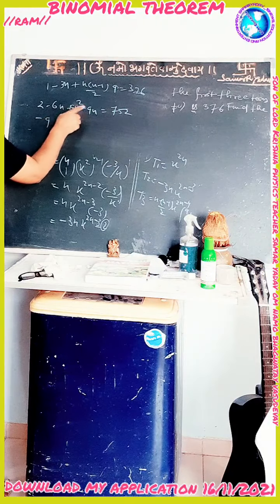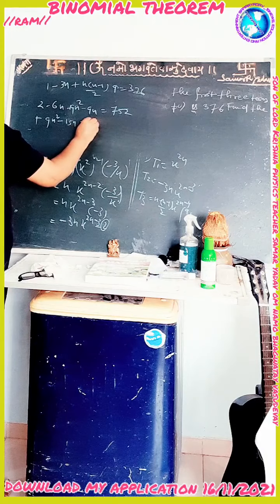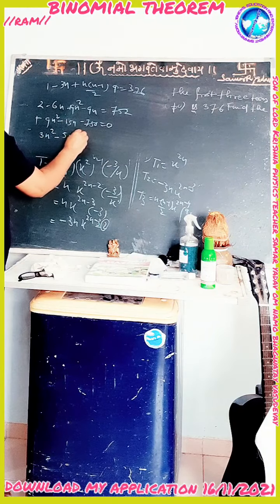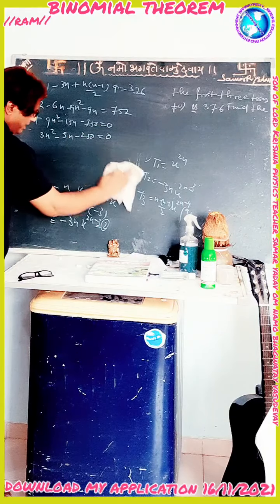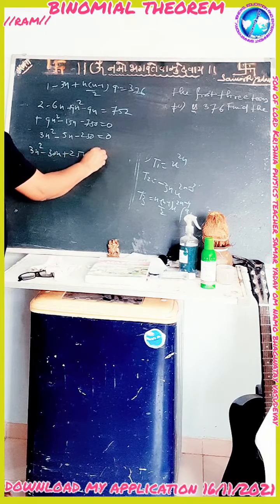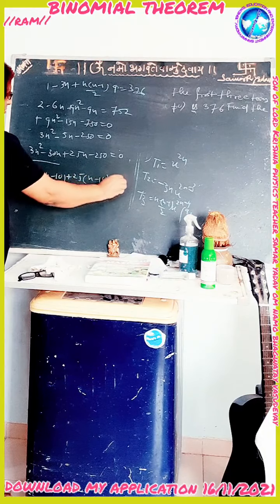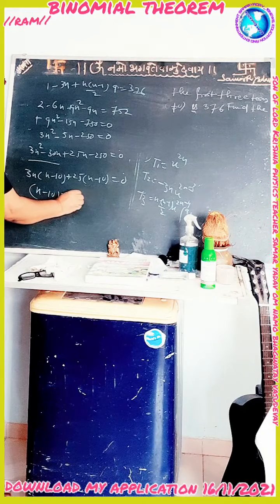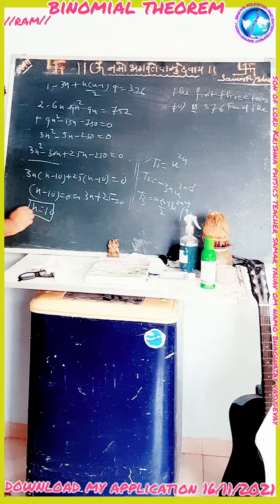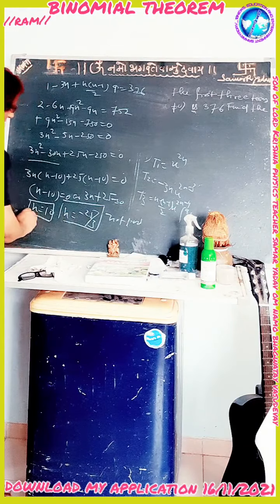Factorising: 3n² − 30n + 25n − 250 = 0, giving (3n + 25)(n − 10) = 0. Therefore n = 10 or n = −25/3. Since n must be a positive integer, n = −25/3 is not possible. So n = 10.